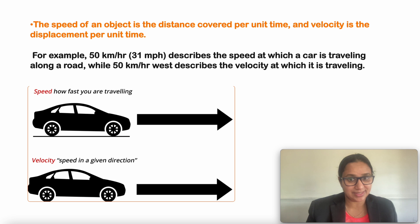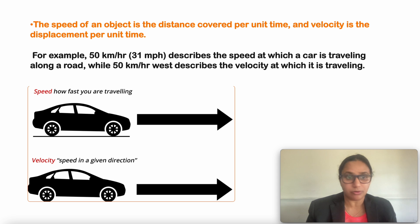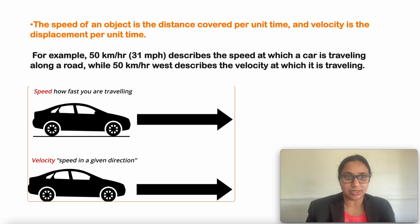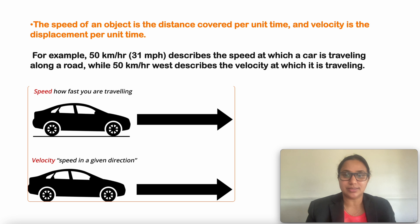For example, 50 km per hour or 30 miles per hour describes the speed at which a car is travelling along a road. But if you add a particular direction — like 50 km per hour to the north — that describes the velocity at which it is travelling. So velocity is speed with direction.